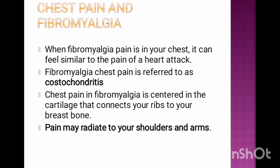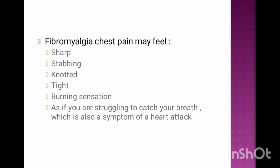Chest Pain and Fibromyalgia: When fibromyalgia pain is in your chest, it can feel similar to the pain of a heart attack. Fibromyalgia's chest pain is referred to as costochondritis — the pain is centered in the cartilage that connects your ribs to the breastbone. Pain may radiate to your shoulders and arms. The chest pain may feel sharp, stabbing, knotted, tight, or like a burning sensation.